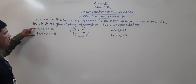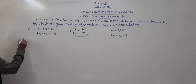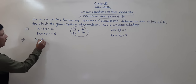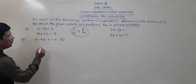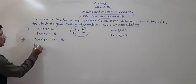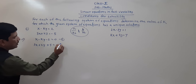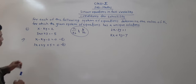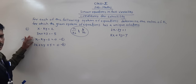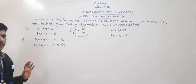Now we need to bring the equations into proper form. First equation: x minus ky minus 2 is equal to 0. Second equation: 3x plus 2y plus 5 is equal to 0. The standard form is a1x plus b1y plus c1 and a2x plus b2y plus c2. Now we need to identify the coefficients.